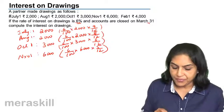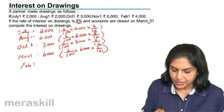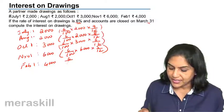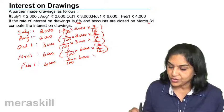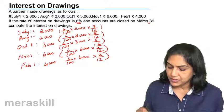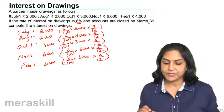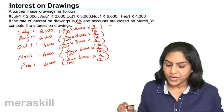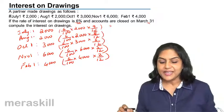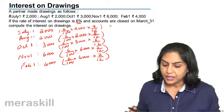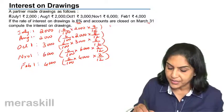Then you have February 1st, 4000. So that's 6% of 4000 for 2 months. So, what is the amount of interest? What is the interest on drawings? This is one method of computing.